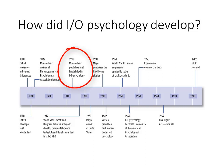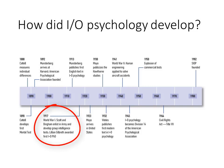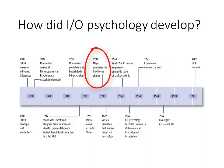In 1917, Yerkes, Scott, and Bingham developed the Army Alpha and Beta tests. Lillian Gilbreth was awarded the first PhD in IO psychology. In the 1930s, the Hawthorne studies examined the impact of illumination on productivity, but instead birthed organizational psychology.